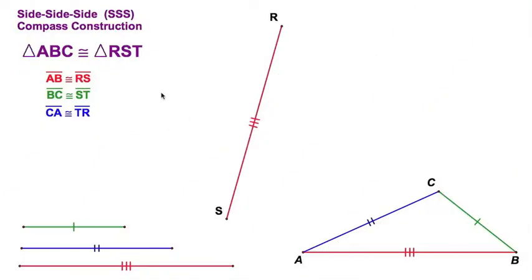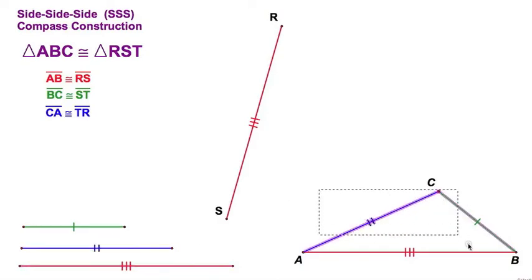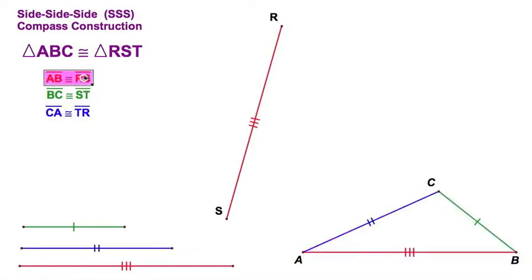Let's get right to it on this worksheet. Triangle ABC is congruent to triangle RST using the side-side-side method. I've got three given segments here and also right here on the given triangle ABC. As we can see, AB must be congruent to RS — the first two letters. RS is my given segment, so it's going to match — we'll call them the red ones. Then the next segment, BC congruent to ST — the short segments, which I'll call the green ones.